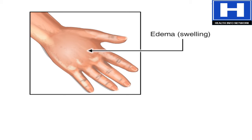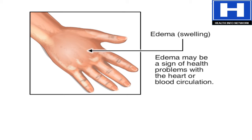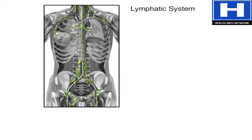Edema, or swelling, occurs when fluid in or between the cells leaks into the body tissues. It is caused by events that increase the flow of fluid out of the bloodstream or prevent its return. Persistent edema may be a sign of serious health problems and should be checked by a healthcare professional.